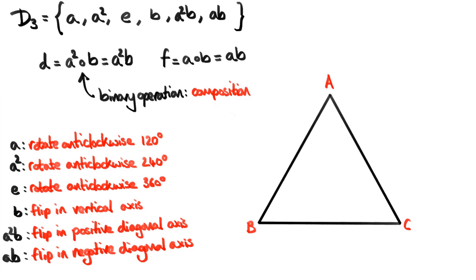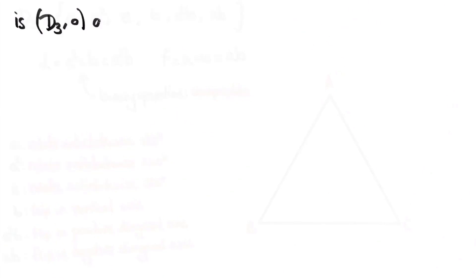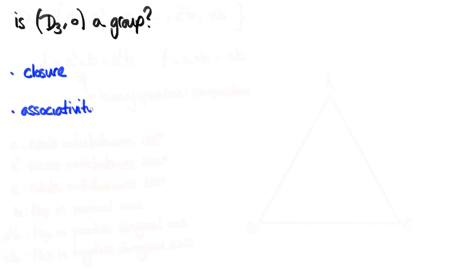Even though we have the set and the binary operation, we're still not sure whether this is a group. Because in order for it to be a group, there are four conditions that the set and the binary operation together must satisfy. Those are closure, associativity, identity, and inverse.